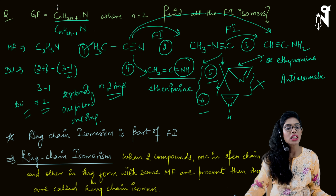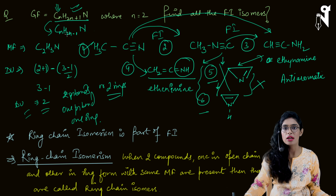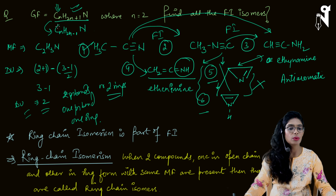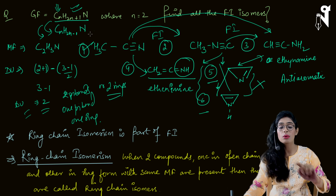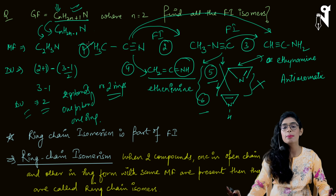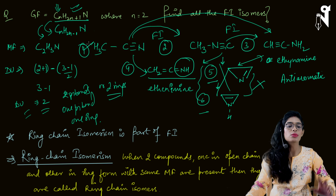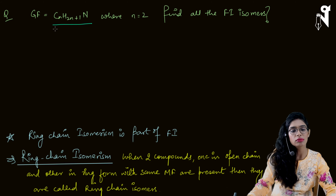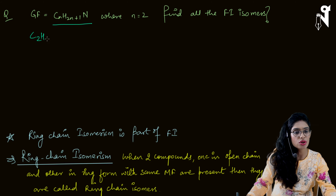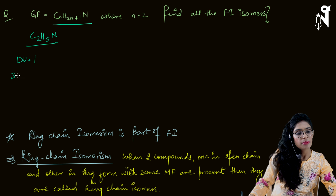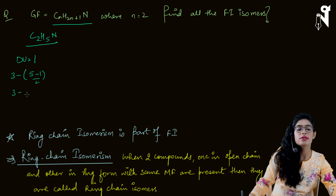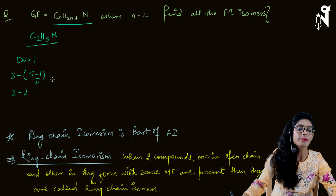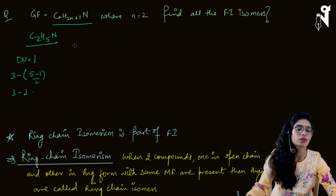We could also solve CnH2n+1N with n = 2. Molecular formula is C2H5N. DU = (2+1) − (5−1)/2 = 3 − 2 = 1. DU is one, meaning one pi bond or one ring. So the chain will have one pi bond or one ring.